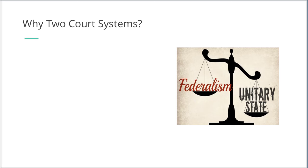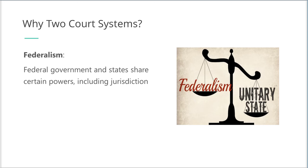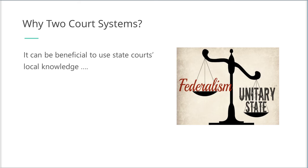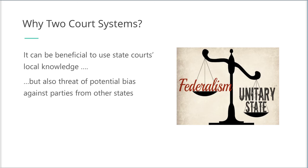Why would there be two separate court systems — federal and state? These exist because it contributes to federalism, the sharing of powers between the federal government and the states. It also improves the system of checks and balances by limiting the power of federal or national courts, and because state courts may benefit from better local knowledge than federal courts. However, there could also be some bias in favor of local parties.